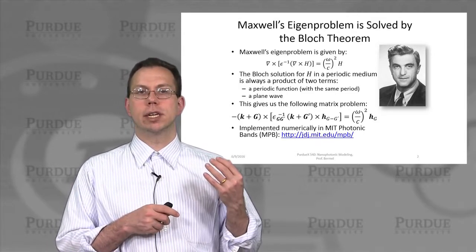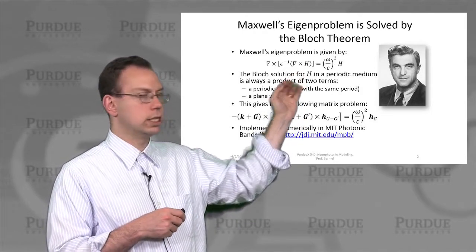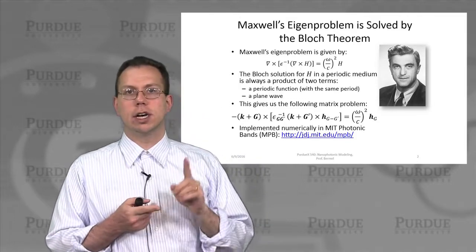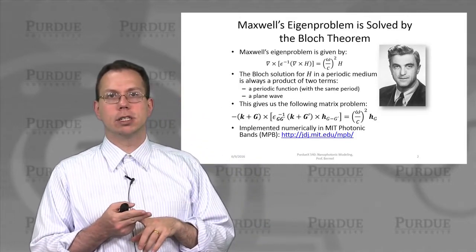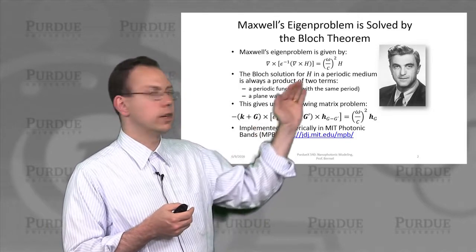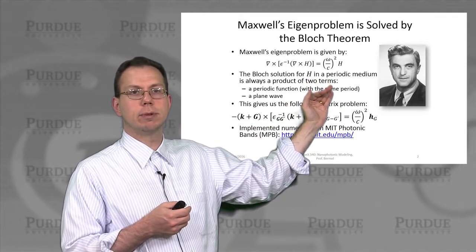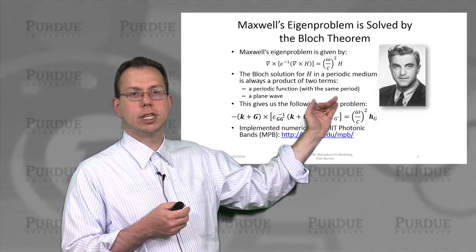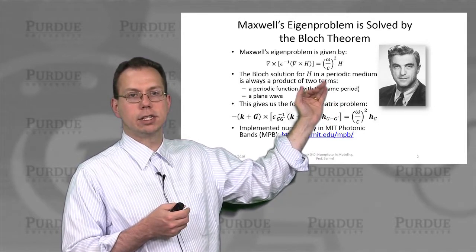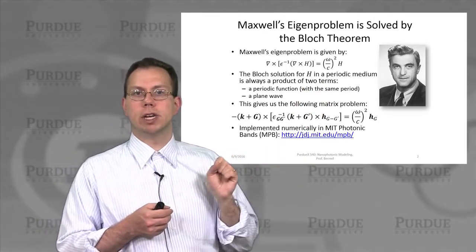We can write down the Maxwell eigenproblem, which is a combination of Faraday's law and Ampere's law with Maxwell's correction, enforcing the transversality of H because there are no magnetic monopoles. We can then use the Bloch solution, which is a periodic function for H — also writable as a Fourier series — times a plane wave.